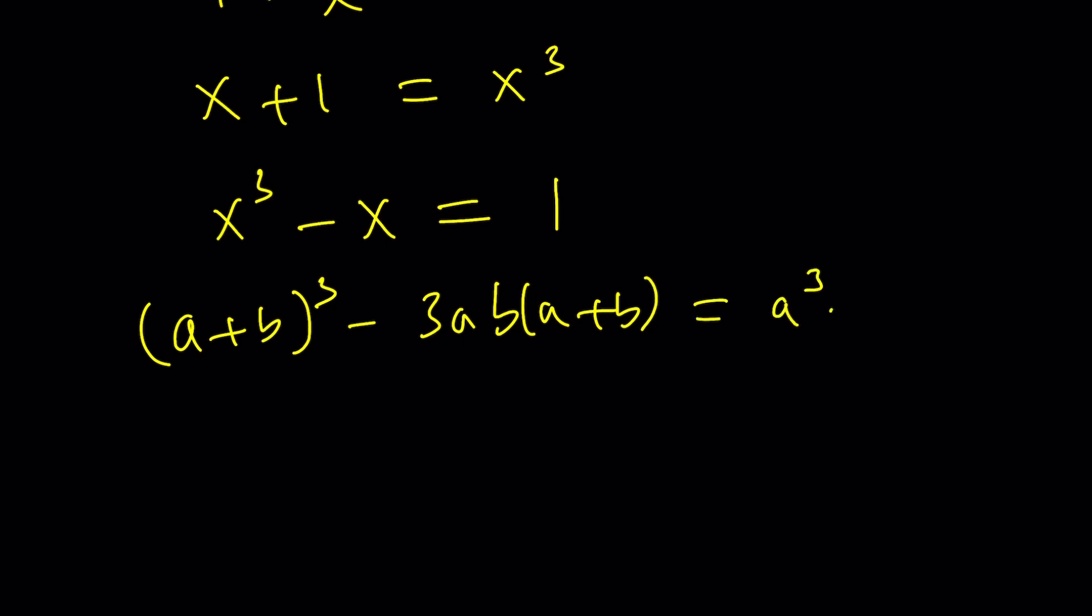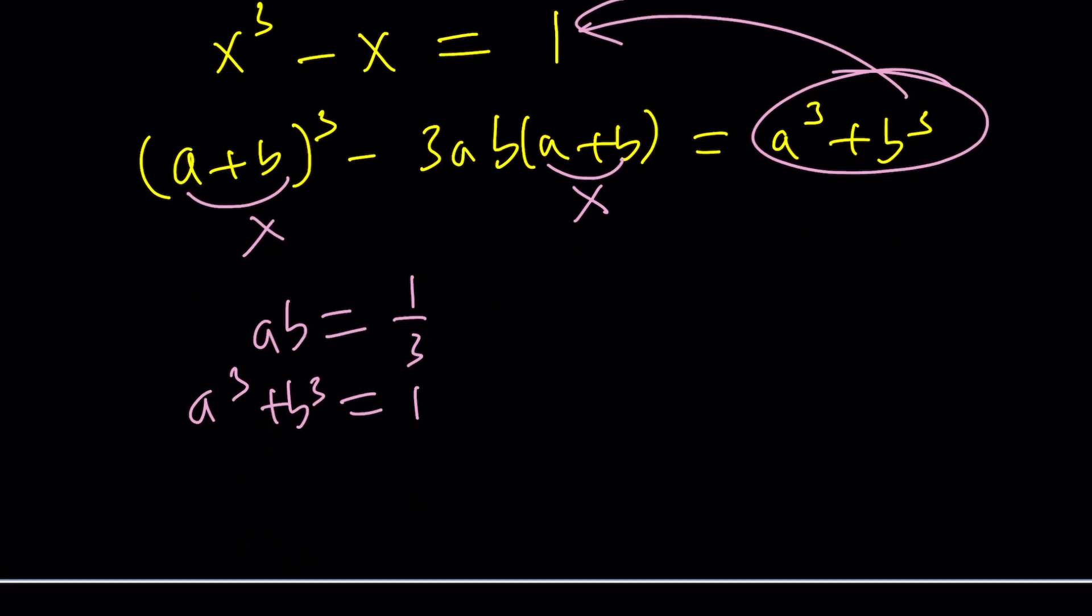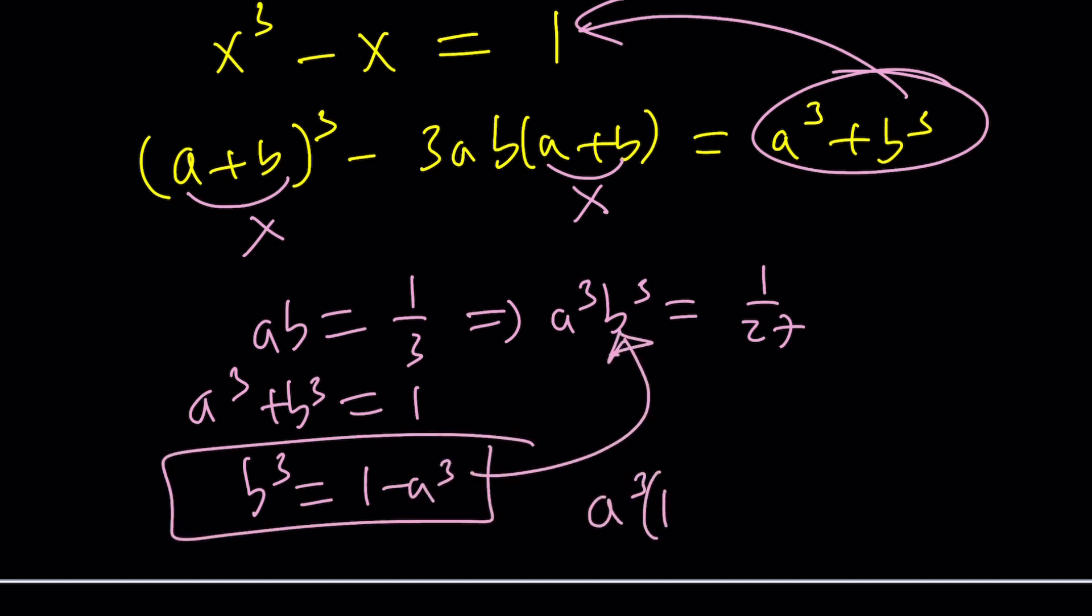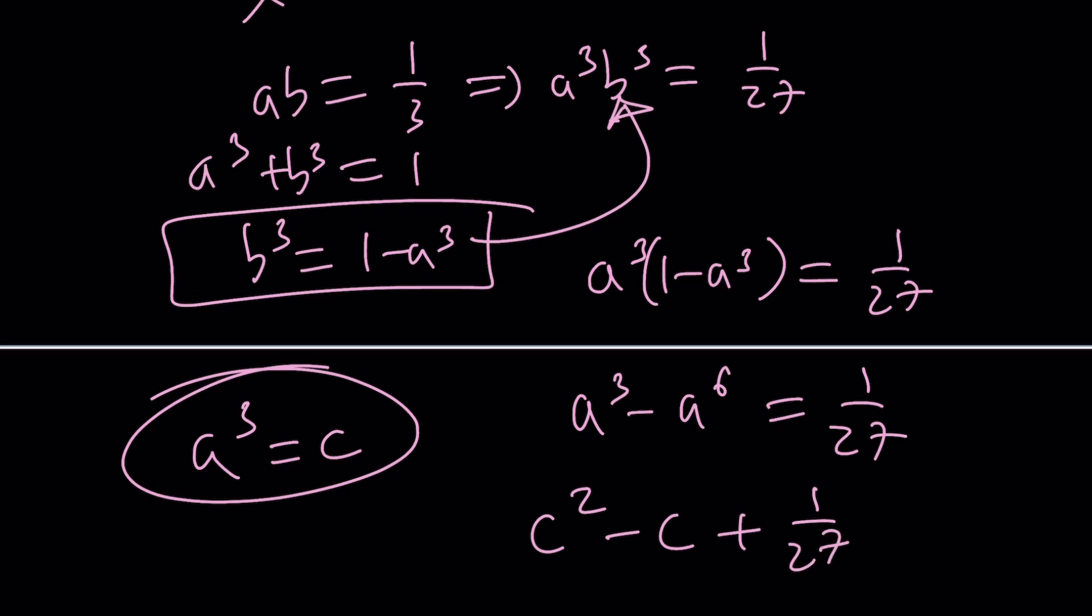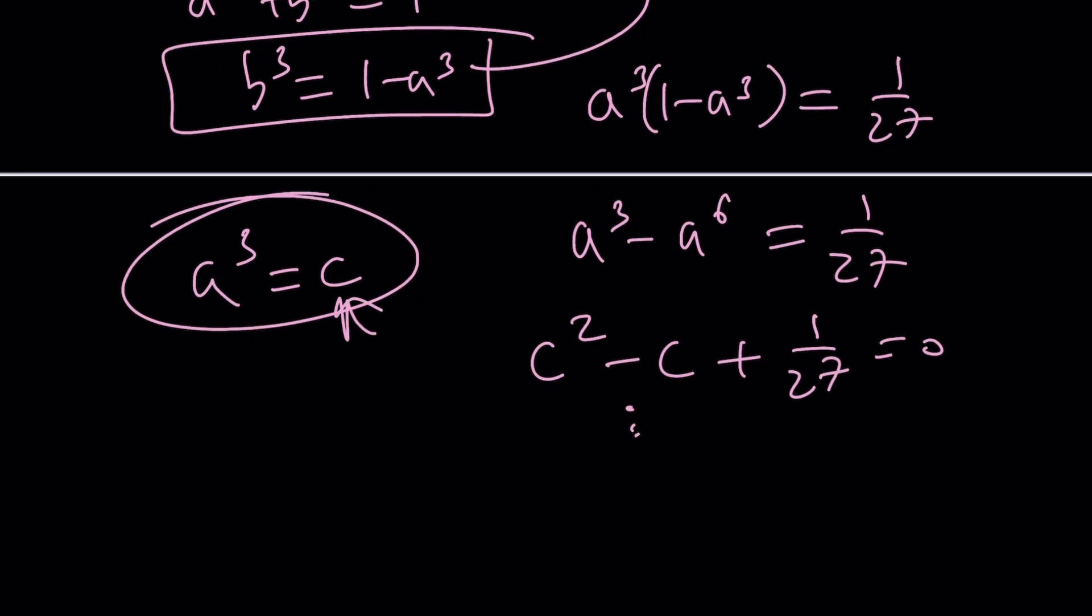You can basically do it as follows. You can set this equal to x and then the coefficient of x is negative 3ab, which is negative 1. So ab is going to be one third and the constant term is going to be 1. So a cubed plus b cubed is going to be 1. You can cube both sides. a cubed b cubed equals 1 over 27. And then you can isolate b cubed, write it as 1 minus a cubed, and then substitute here. Power of algebra. And then you're going to get an equation like this. a cubed minus a to the 6 equals 1 over 27. And then do the substitution a cubed equals c. Then you'll get c squared minus c plus 1 over 27 equals 0. As you can see, this is quadratic. Solve for c. Cube rooted, there is going to be two answers. One of them is going to be a. The other one is going to be b. Add them, you'll get x.